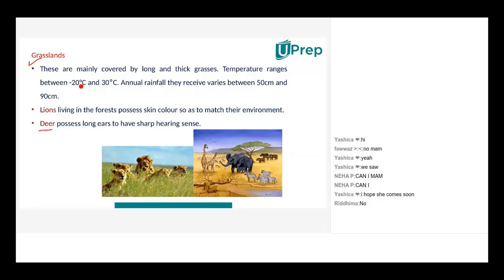When we say terrestrial habitats, we said forests, grasslands, polar regions — but why can't we mention the zoo? There are many animals there. That is a man-made habitat; that's not a natural habitat. We have made an artificial habitat. It is a habitat, but we are not discussing anything artificial — then we would also have to discuss cities and our houses, which are also habitats. We are just discussing whatever is a natural habitat.